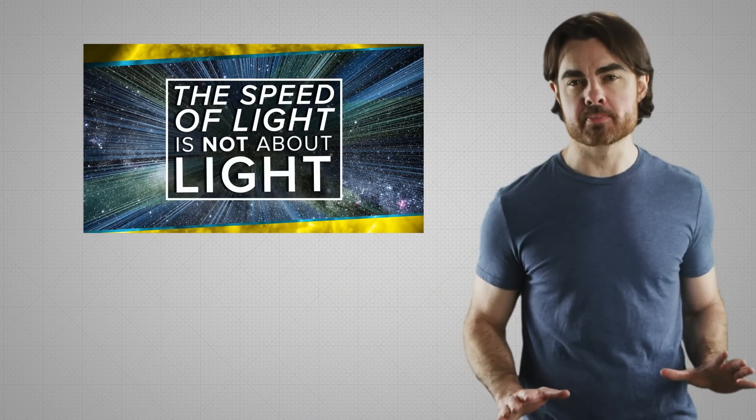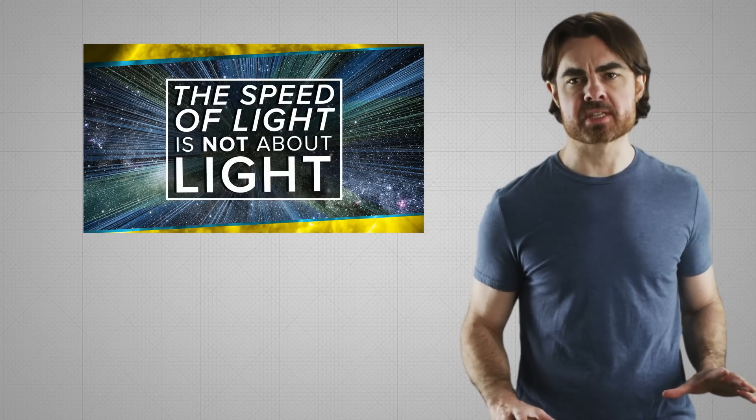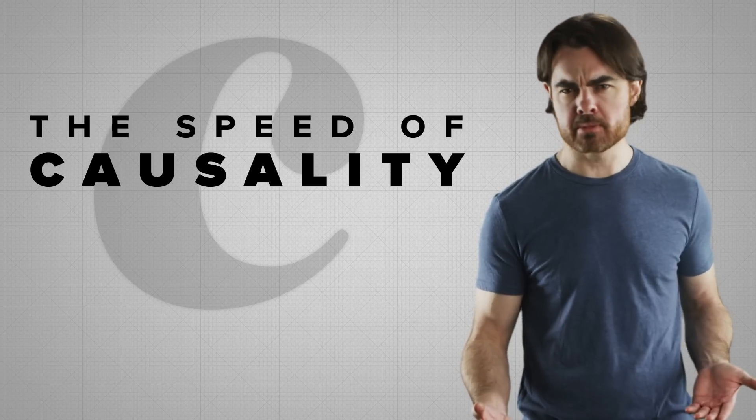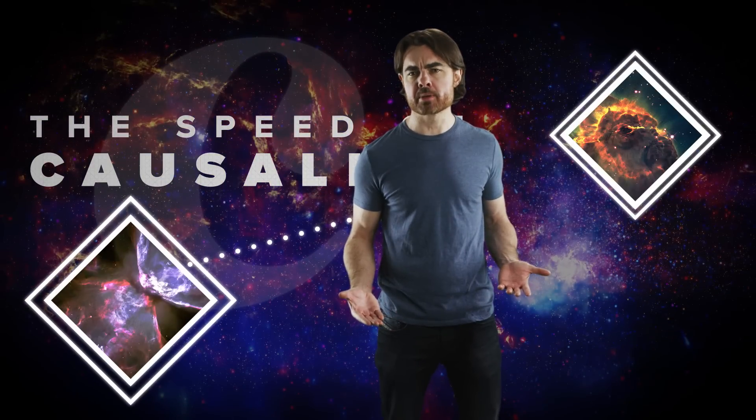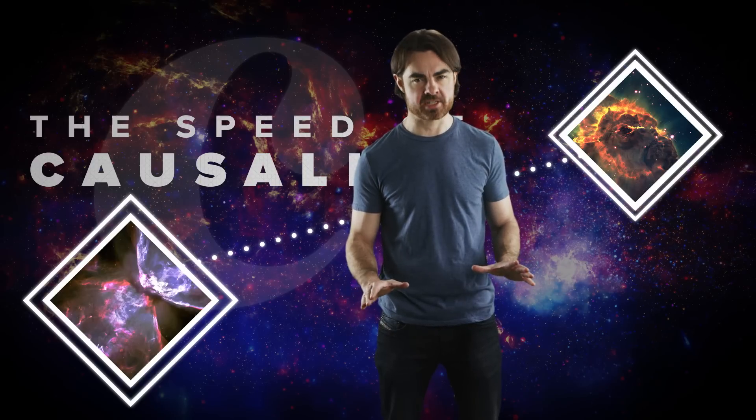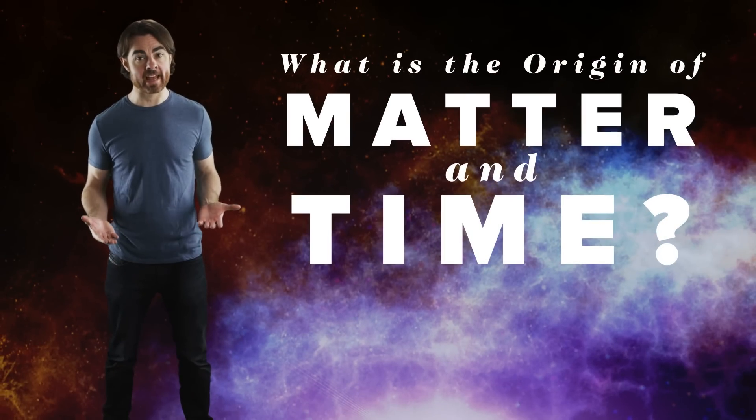In a previous episode, we talked about the speed of light, the fastest speed there is. And we talked about how this speed limit is really the speed of causality. It's the maximum speed at which two neighboring bits of the universe can talk to each other. Anything without mass has to travel at this speed. But what is it about mass that prevents something from reaching the ultimate speed? The answer to this will take us to a much deeper question. What is the origin of matter and time?